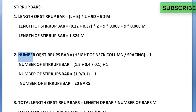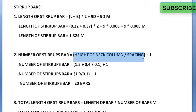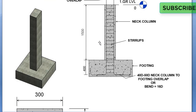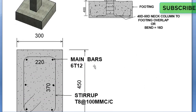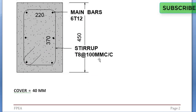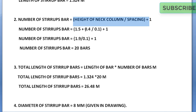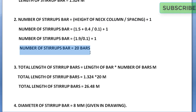The number of stirrup bars is calculated as height divided by spacing plus 1. The height of the neck column is 1500 mm plus 400 mm, equal to 1900 mm or 1.9 meters. Spacing is 100 mm, which is 0.1 meters. So 1.9 divided by 0.1 plus 1 gives 20 stirrup bars.